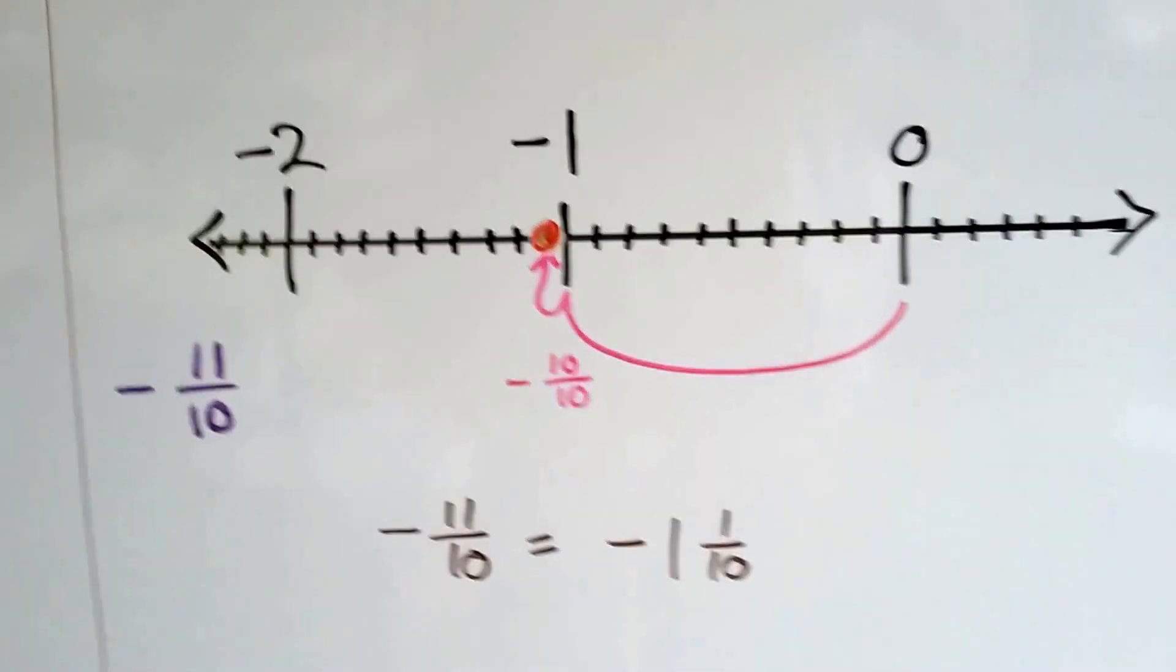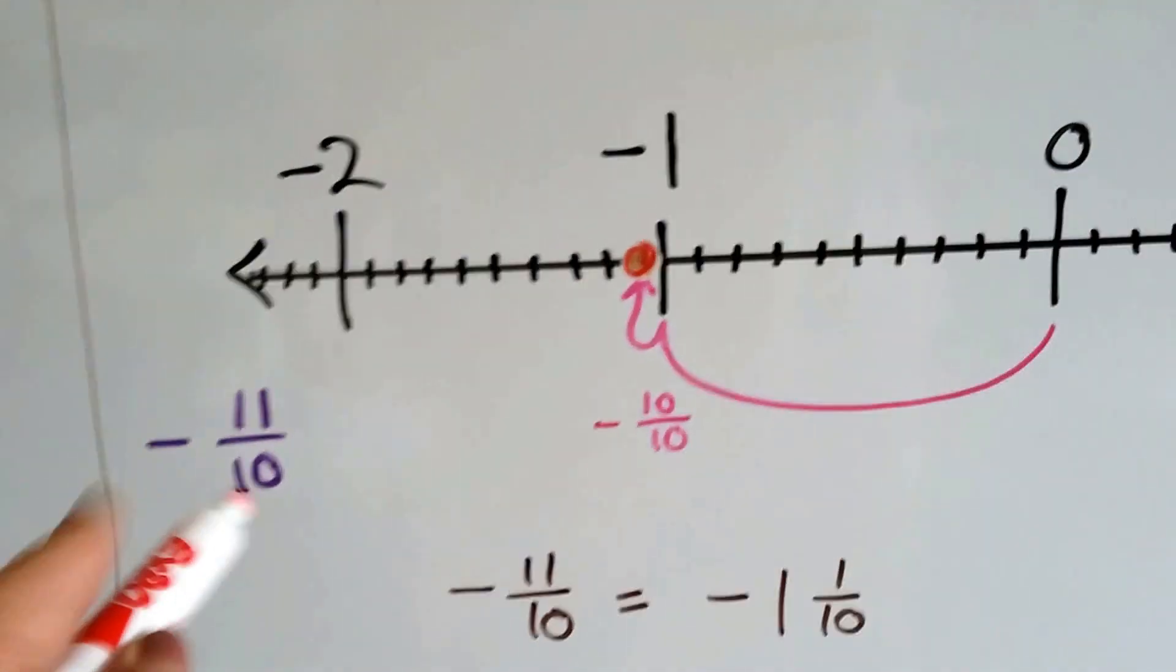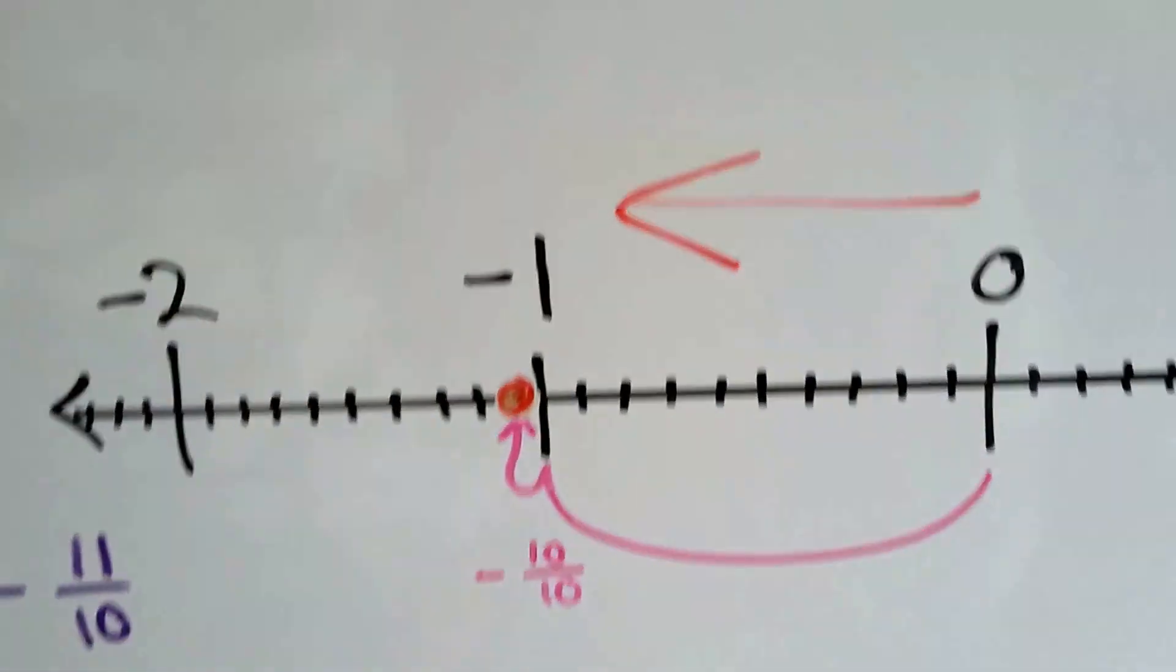How about this one? We've got negative eleven-tenths. Because of that negative sign, we know we're going to be on this side of the zero.